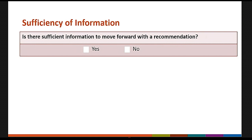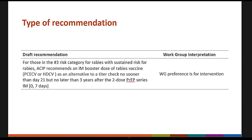The draft recommendation for policy question two: For those in risk category three with sustained risk for rabies, ACIP recommends an IM booster dose of rabies vaccine PCECV or HDCV as an alternative to a titer check, no sooner than day 21 but no later than three years after the two-dose PrEP series IM 0-7 days.